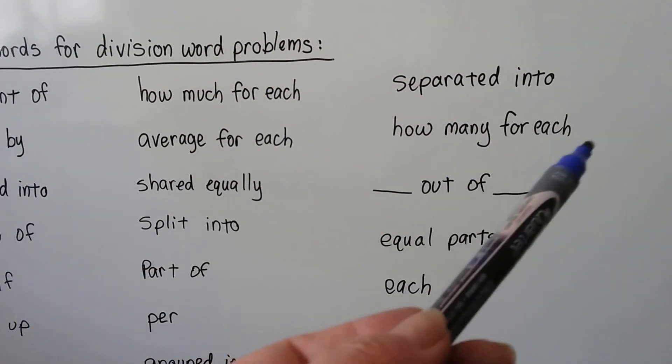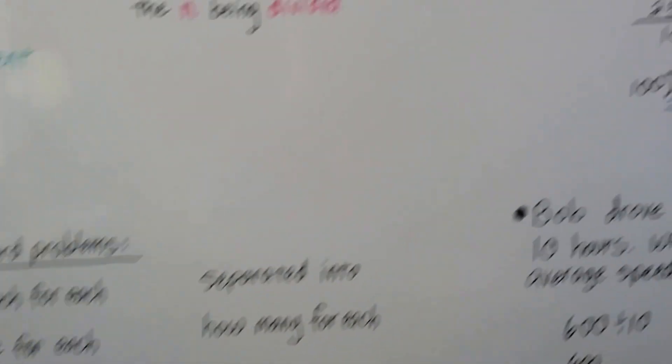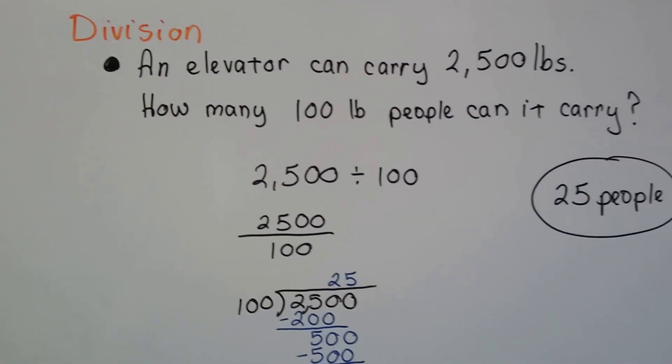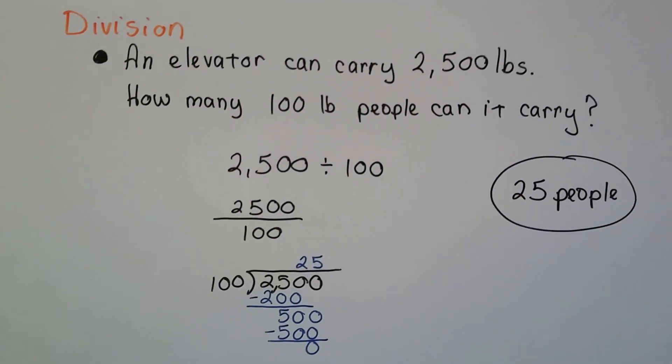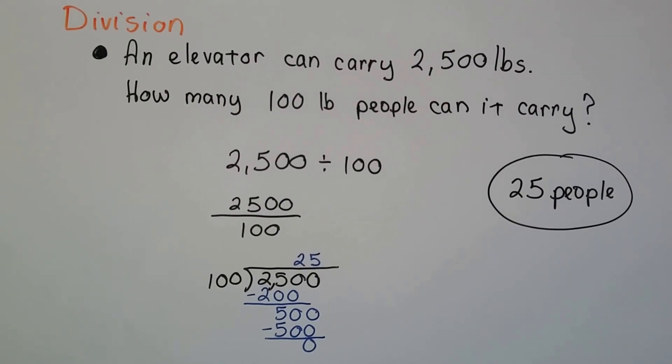If you notice, each was used a lot, wasn't it? So here's a division problem. An elevator can carry 2,500 pounds. How many 100 pound people can it carry?